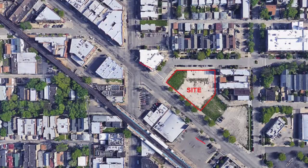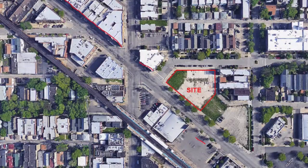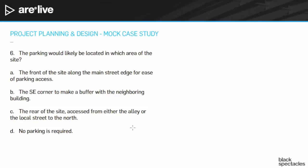You look at these buildings here, which would clearly have big windows on the street, and all of these, which would clearly have big windows onto the street. This is an opportunity to keep that going, and that would be something the zoning code would be leaning towards. You could put it on the street edge — you can see some other examples that do — but that's because they have much bigger sites and didn't need the full site to build. For our purposes, the smartest answer here would be to the rear of the site, accessed from either the alley or from the local street to the north.